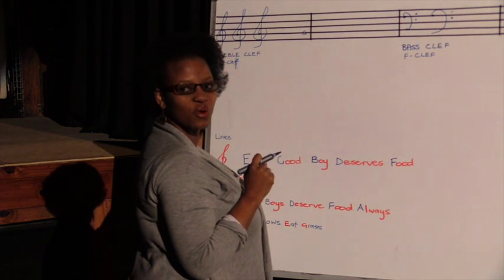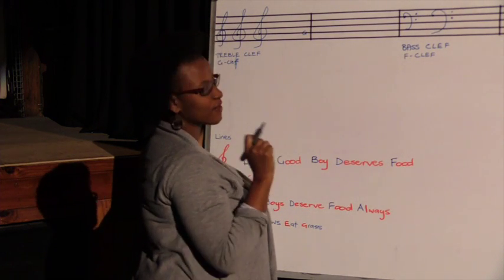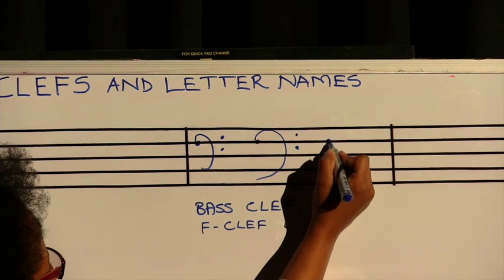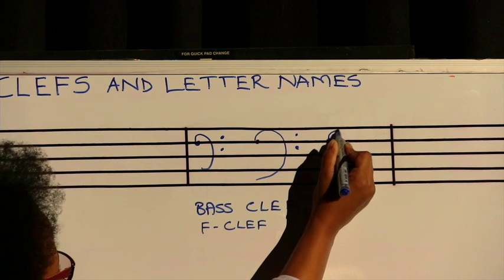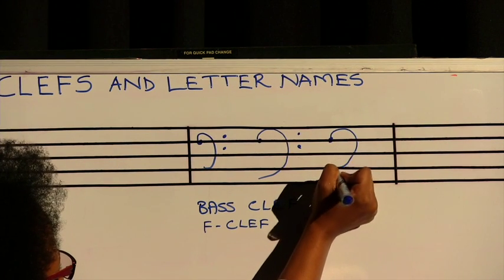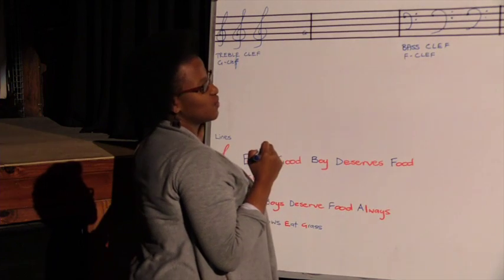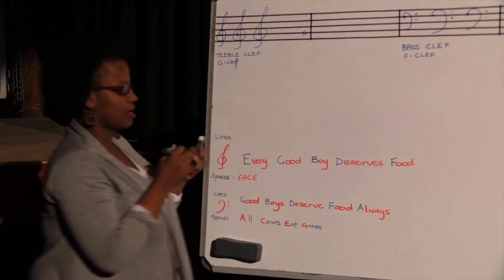That's how we draw our F clef or bass clef. Let's do it again. Make a dot on the F line, all the way like a little ear, and then finish it off with our two dots.